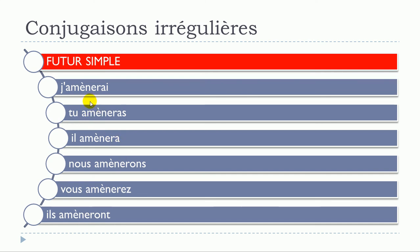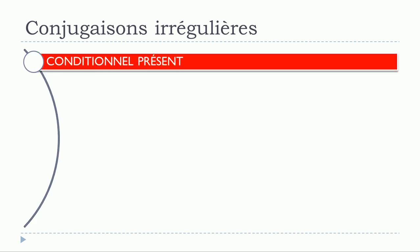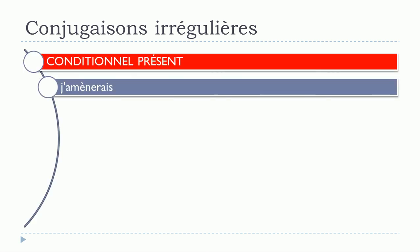The modification is exactly the same as we saw previously — it's just the accent grave placed on top of the E: amènerai, amènera, amènerons, amènerez, amèneront. Now let's look at the conditionnel présent: j'amènerais.